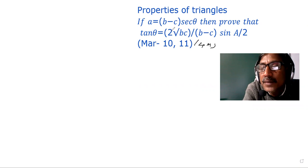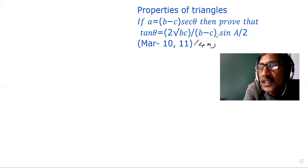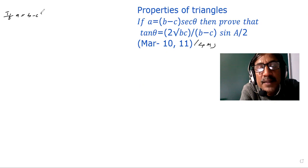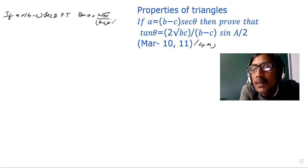Very very important. If a is equal to (b minus c) into sec theta, then prove that tan theta is equal to 2√(bc) divided by (b minus c) whole square into sin(A/2). This appeared in March 2011 and is very very important.